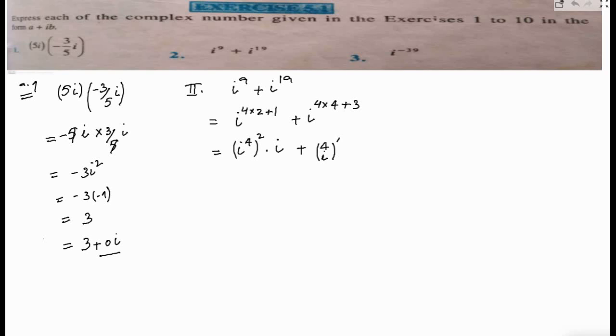We get iota to the power 10 plus iota to the power 4. Iota to the power 4 is 1, so we're left with iota only. Plus iota to the power 4 is 1, again 1 to the power 4 is 1.